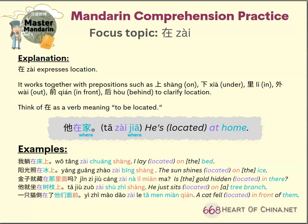Focus topic: 在. 在 expresses location. It works together with prepositions such as 上, 下, 离, 外, 前, and 后 to clarify location.